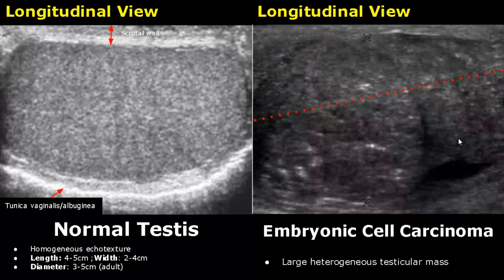Embryonal cell carcinoma is a malignant lesion of the testis. It can appear as a large heterogeneous testicular mass.